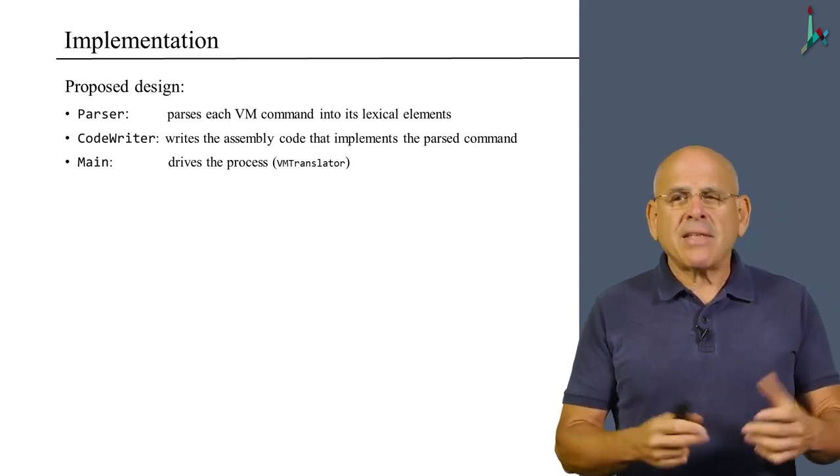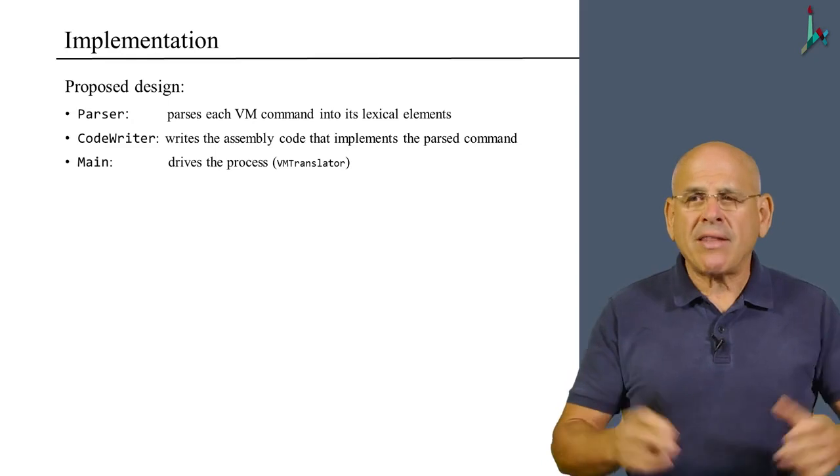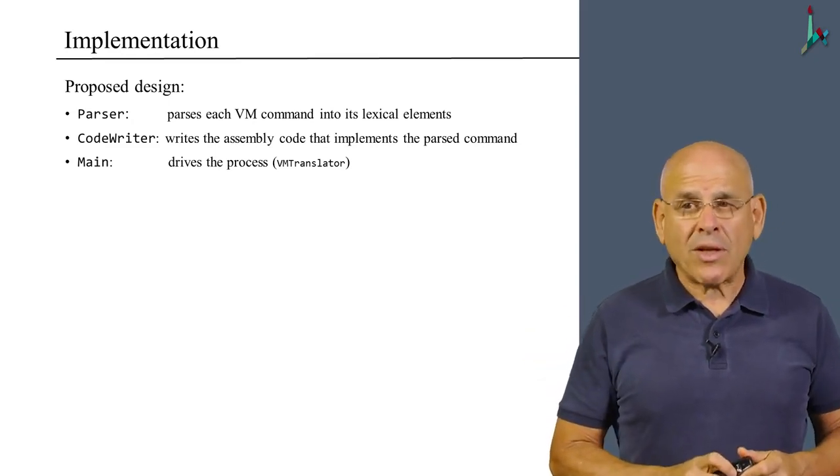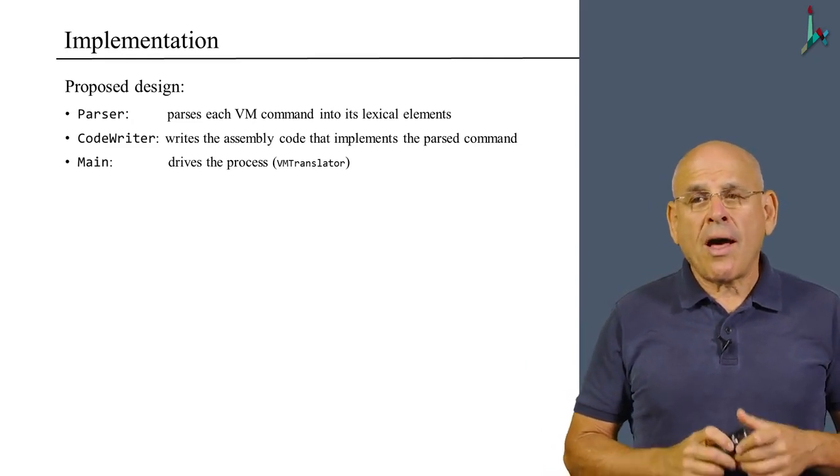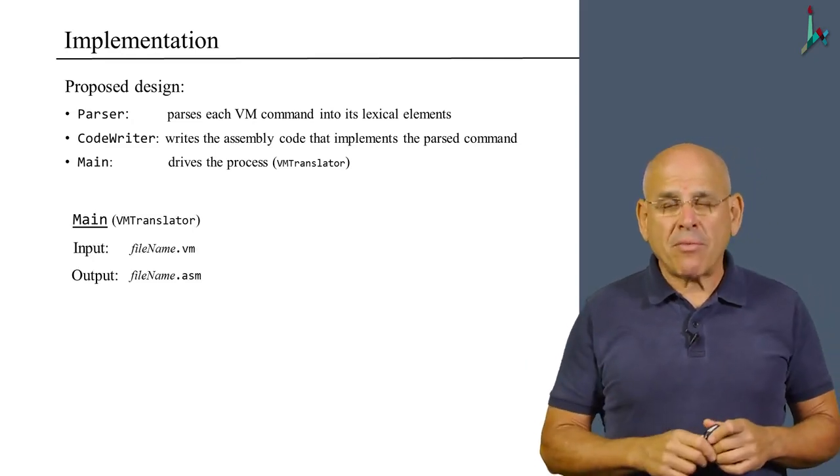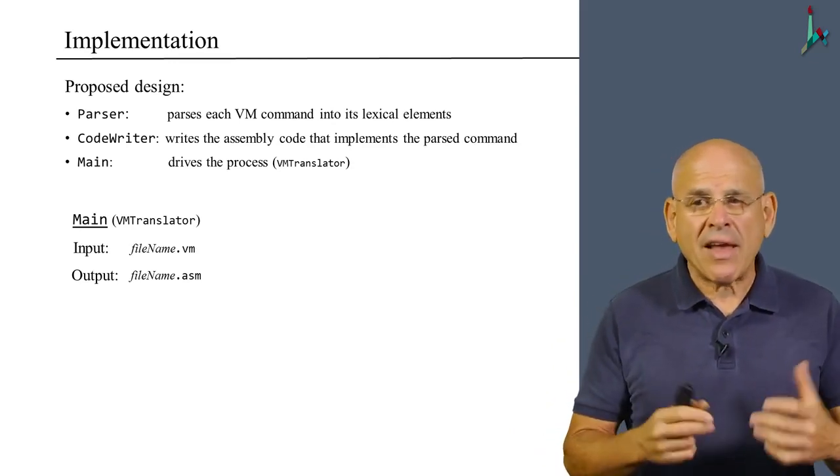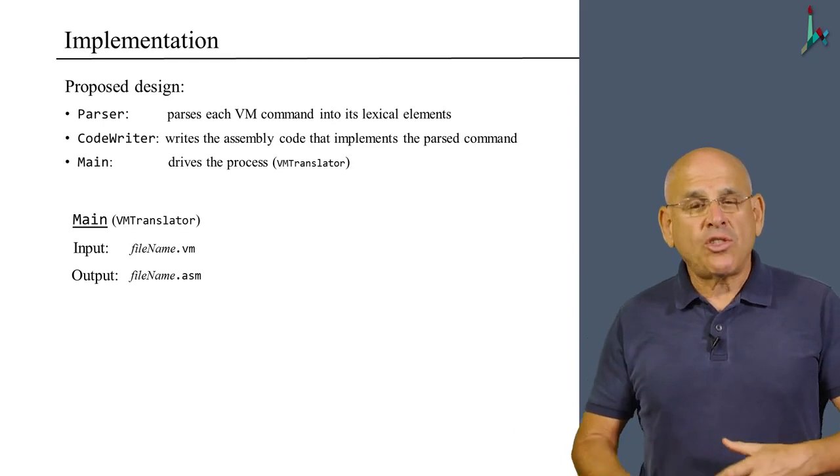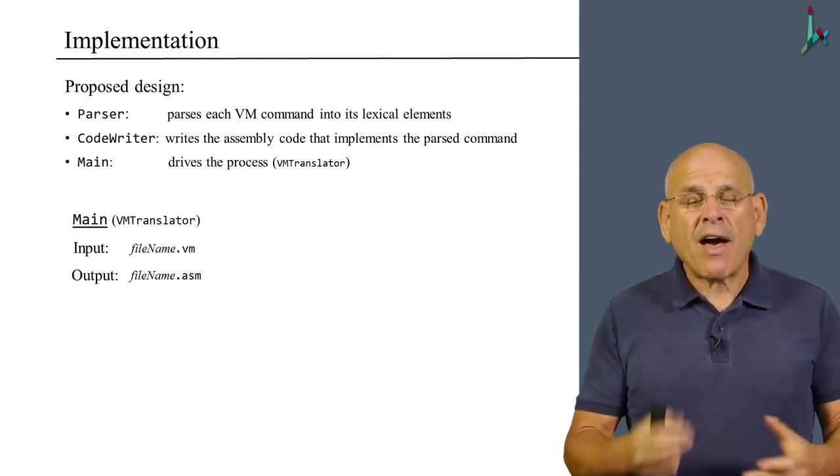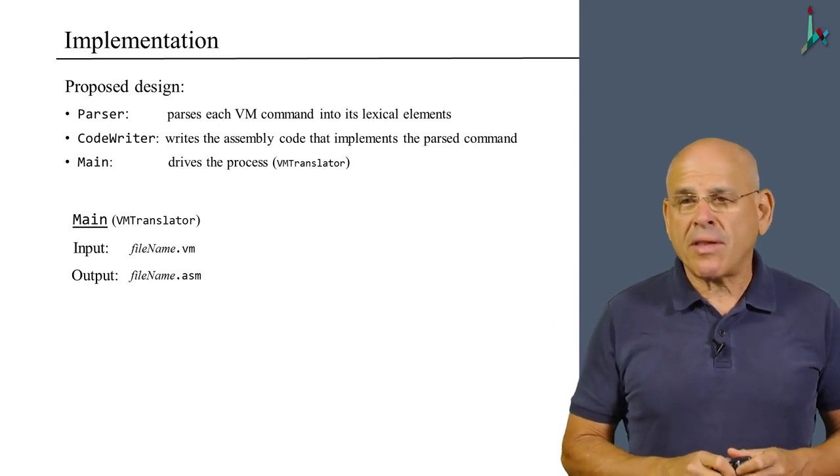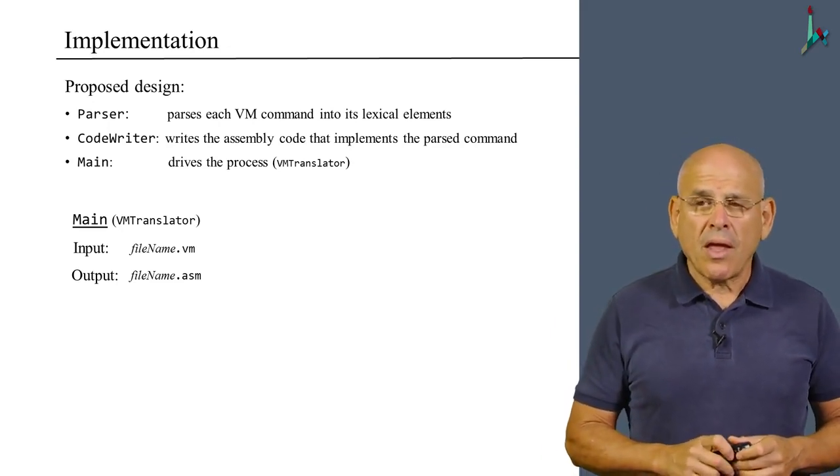And the main class is just a surrogate name for the class that we saw before, which will be called VMTranslator. So the main class, the VMTranslator, has one input, which is a filename.vm. And it generates as output a filename.asm, as we saw in the demo that I previously showed you.